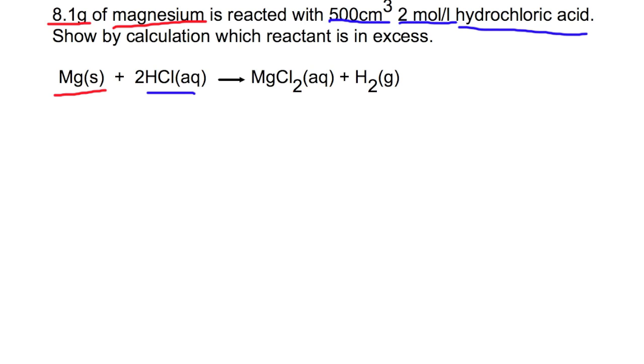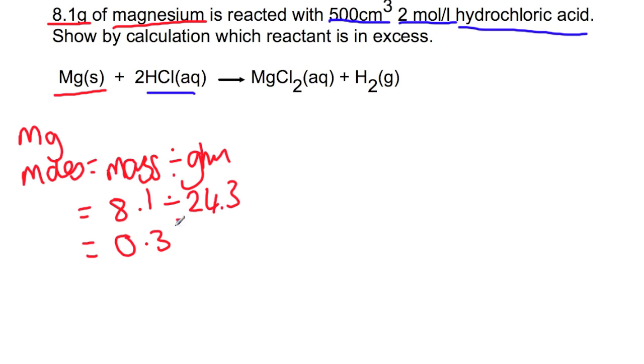The first step in excess calculations is to calculate the moles for each of your reactants. So for the magnesium, when we calculate the moles, we are going to do moles equals mass divided by gram formula mass. We have 8.1 grams from the question. The GFM is 24.3 and if you do that calculation, you'll get 0.33 moles of magnesium.